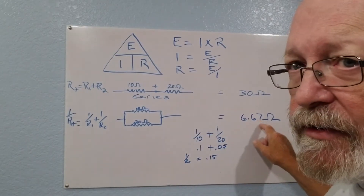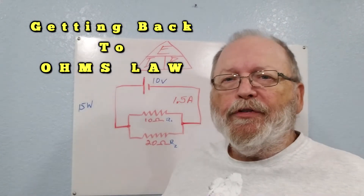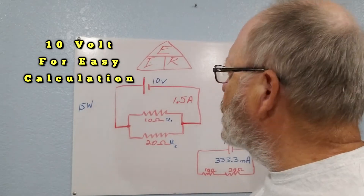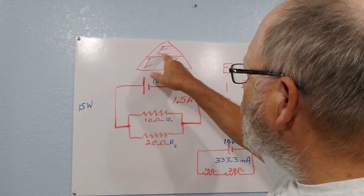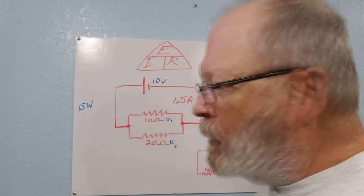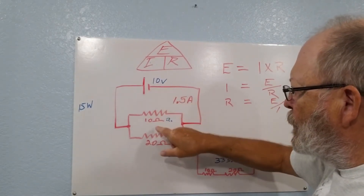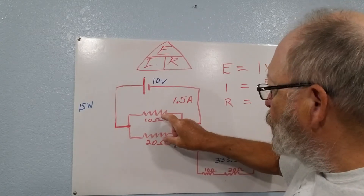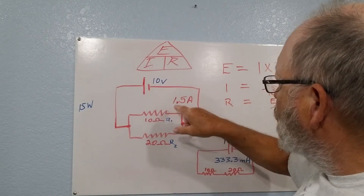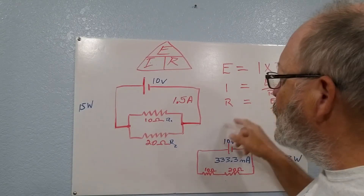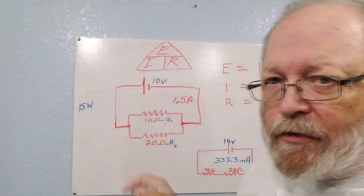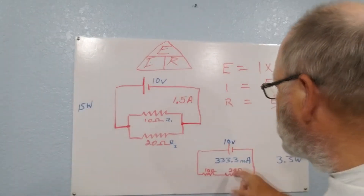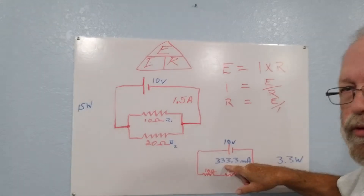1/10 plus 1/20 equals 0.15, which comes out to 6.67 ohms total for the parallel circuit. Taking those same 10 ohm and 20 ohm values and putting them against a 10 volt battery using Ohm's Law — current equals voltage over resistance — the parallel circuit at 6.67 ohms gives 1.5 amps. The same two resistors in series at 30 ohms with 10 volts comes out to 333.3 milliamps.